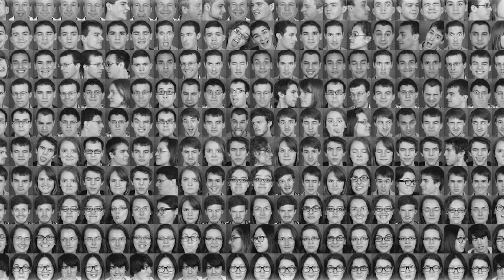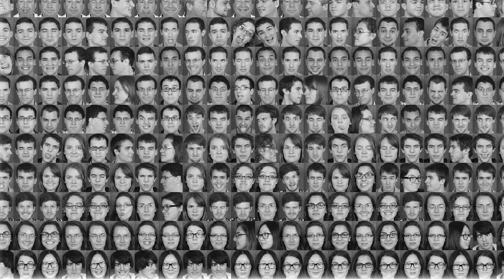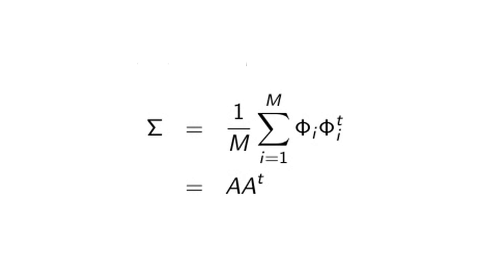Once the images have been checked and confirmed that they are grayscale, move along to prepping the database of faces. In order to create the eigenfaces, the average face must be created. This is done by averaging each of the database images pixel by pixel. Each database image then subtracts the average image from it, leaving a matrix of database faces where each face shows the unique difference between it and the average face. Each image should then be formed into a column vector and brought together into one matrix.